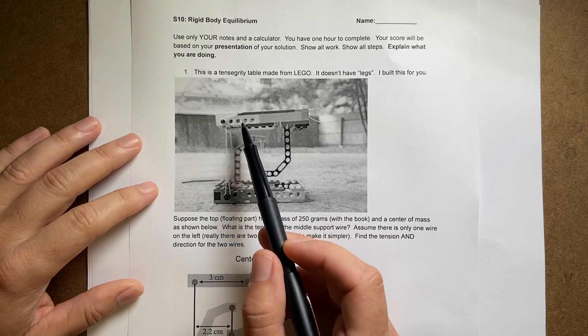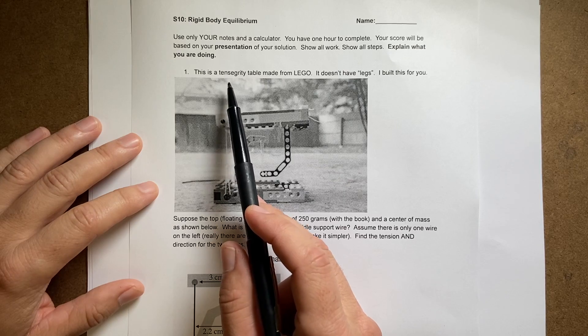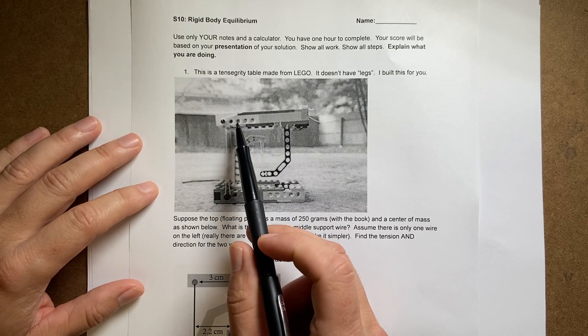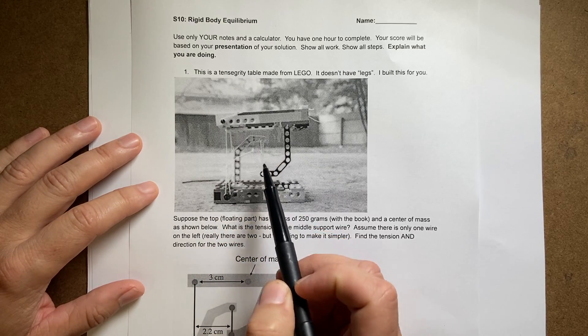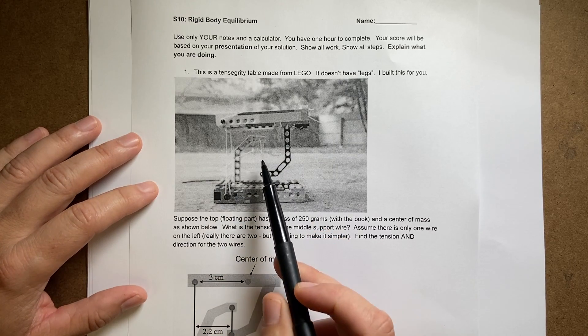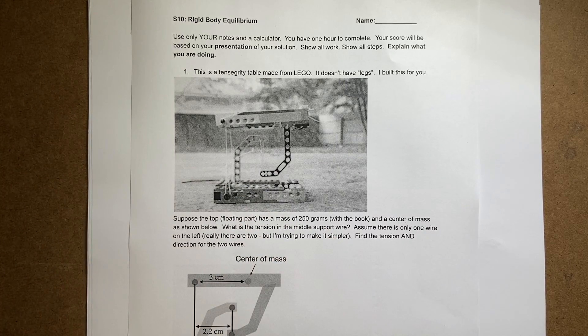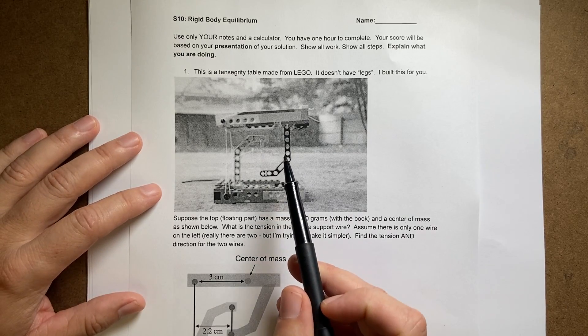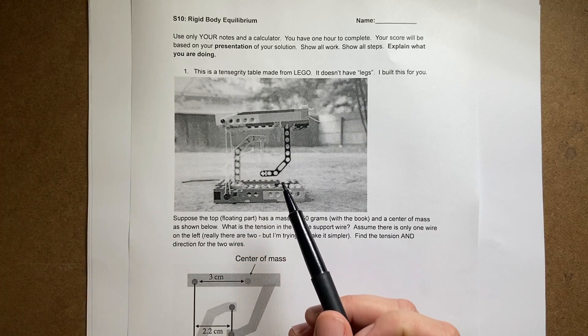So this is, I think it's called a Tensegrity table. The basic idea is it looks like this table is floating on top of this other one because there's only strings that look like they hold it up, but they're not really holding it up. It's really cool and it's easy to build and you should build one.